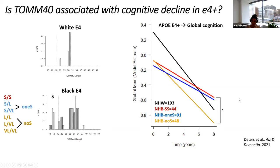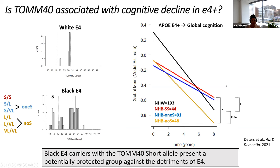Comparing to white E4 carriers, who have no variation and are categorized as long for 523, we see two things: white individuals have a higher intercept for global memory relative to Black individuals, but the slope between white E4 carriers and Black E4 carriers without a short allele is not statistically different. However, white E4 carriers and Black E4 carriers with a short allele are significantly different, suggesting that this group of Black individuals may be protected against the detriments of E4, or decline at a slower rate.